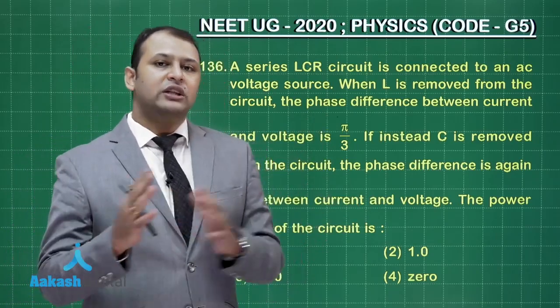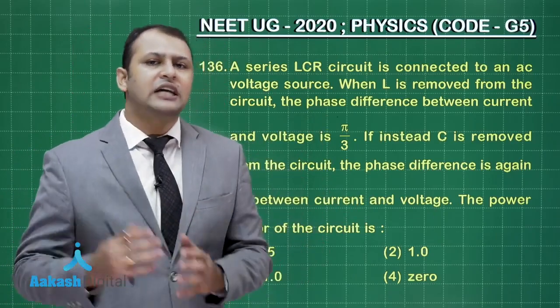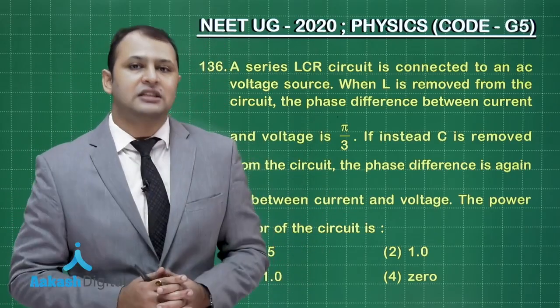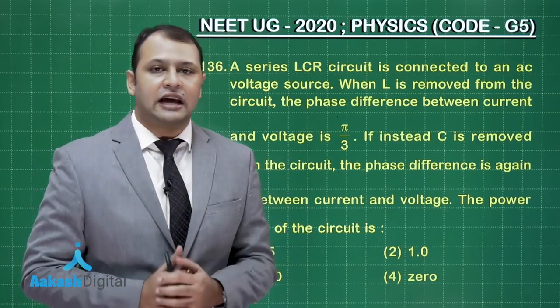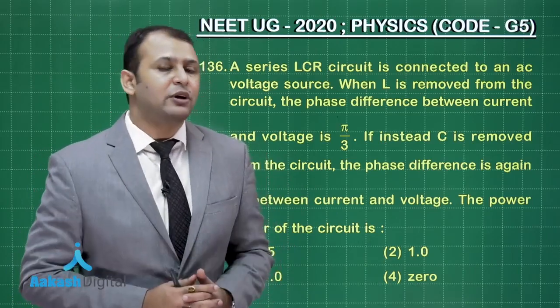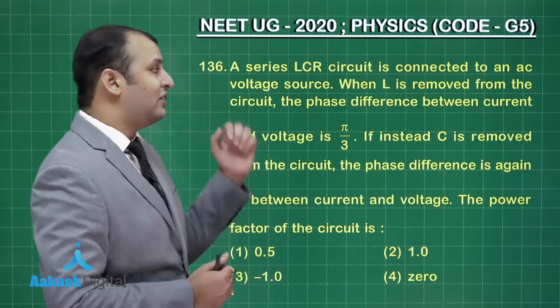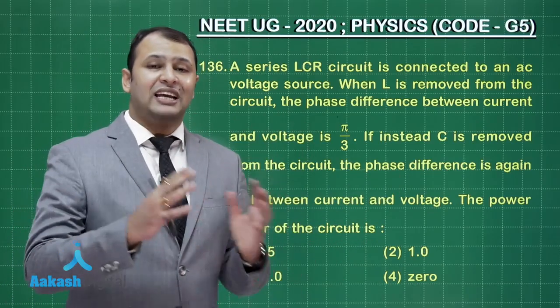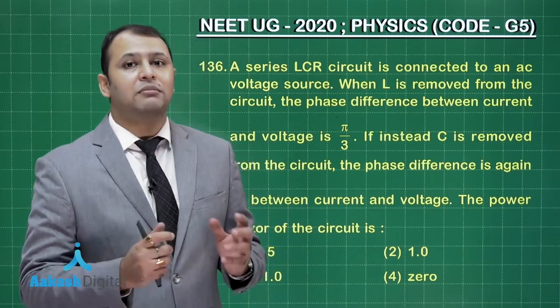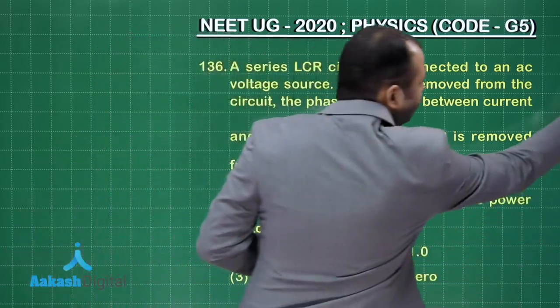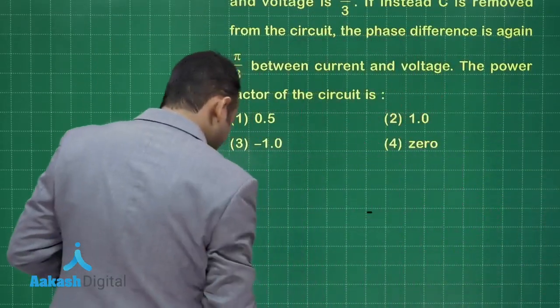Now we have to understand in both the cases, whether it is LR or CR circuit, the phase difference remains the same, only the leading and lagging changes. This can happen only when there is a condition of resonance at the time of LCR. That means both XL and XC are equal in magnitude. In that case, when you understand, you will find, let us see the solution.